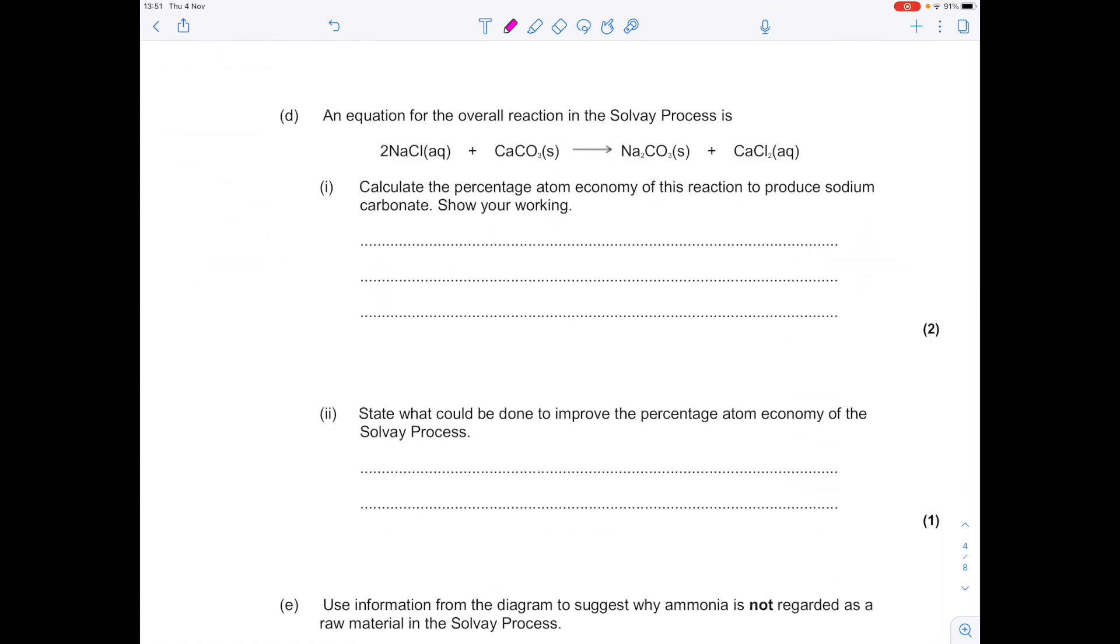Now we're interested in atom economy. So an equation for the overall reaction in the Solvay process is this. Calculate the percentage atom economy of this reaction to produce sodium carbonate. So just to show you the equation here. Atom economy is the useful products MR over the MR of reactants times by 100. So sodium carbonate is our useful product. So sodium is 23 times 2 plus 12 plus 3 lots of oxygen over the MR of all the reactants. Notice that I'm including those big numbers in my working. I know that the MR of calcium carbonate is 100. Then just pop that all into your calculator. So get a final answer of 48.8%.